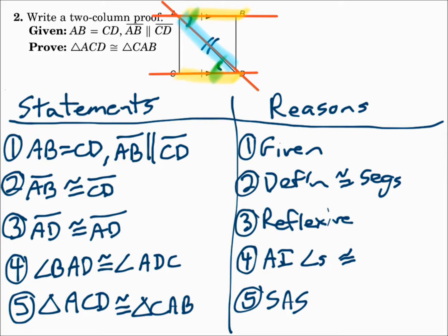So you had a pair of sides congruent because you were given their measures are equal. You had a pair of sides the triangles shared, so you used the reflexive property. And you had parallel lines cut by a transversal with congruent alternate interior angles. That's enough to show the triangles are congruent by Side-Angle-Side. When proving triangles congruent, use the information given and look for extra pairs: shared sides, vertical angles, alternate interior angles, midpoints, or bisectors.